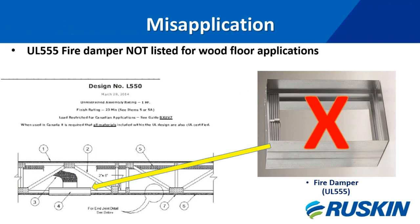One common misapplication is using a horizontal curtain fire damper in place of a CFD. This is not a UL listed installation and needs to be avoided at all costs. If you use a curtain damper in this application, you may be required to remove the dampers and replace them with the proper model for that application.